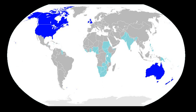English is unusual among world languages in how many of its users are not native speakers but speakers of English as a second or foreign language. Many users of English in the expanding circle use it to communicate with other people from the expanding circle, so that interaction with native speakers plays no part in their decision to use English. Non-native varieties of English are widely used for international communication, and very often today a conversation in English anywhere in the world may include no native speakers at all.